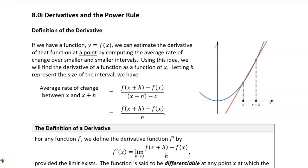In general, we can estimate the derivative of a function at a point by computing the average rate of change over smaller and smaller intervals around that point. And then using that idea, we can actually come up with a formula for the derivative. So at an arbitrary point x, we can look at the average rate of change between x and x plus h, and then let h get smaller and smaller, because essentially h is the interval width. This average rate of change is essentially slope — it's just a change in the function over the change in x, delta y over delta x.